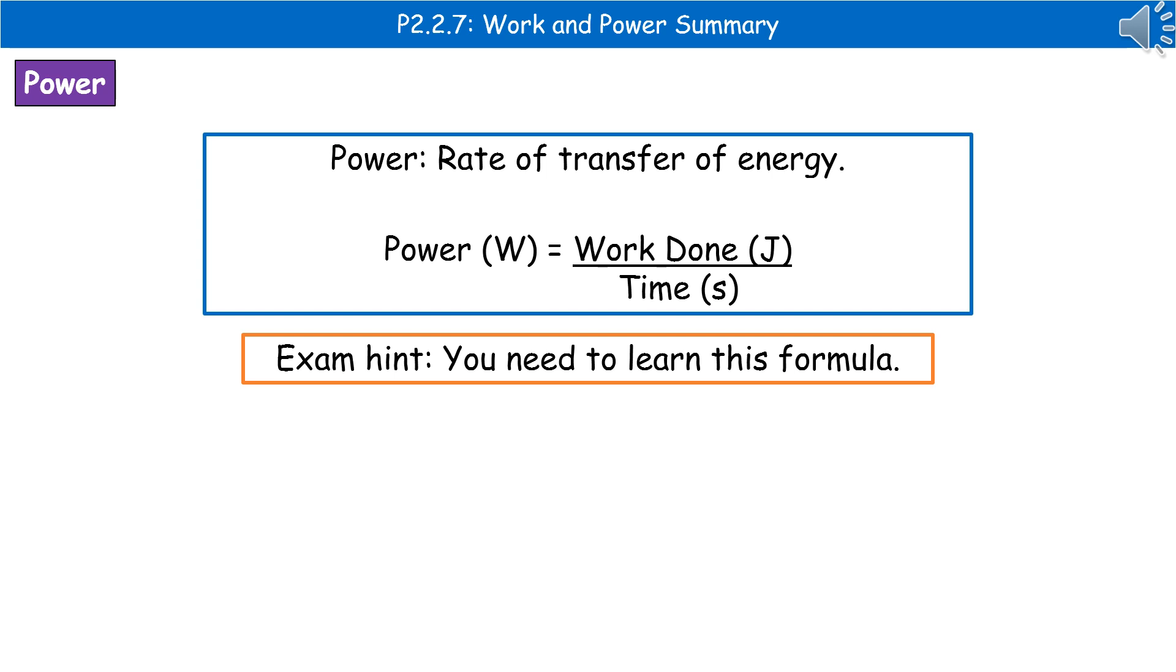The second part to this is to look at power. When we're talking about power, we are talking about the rate of transfer of the energy. The equation we need to know for this, power, which is measured in watts, which is given the symbol of a capital W, is the work done divided by the time.